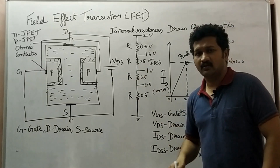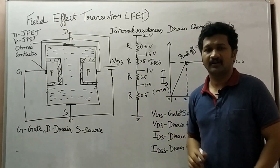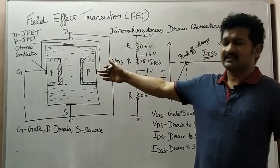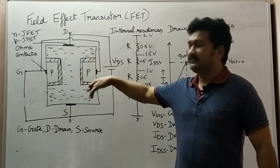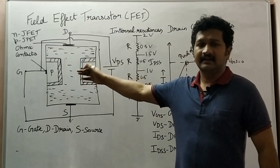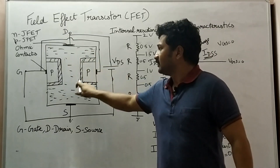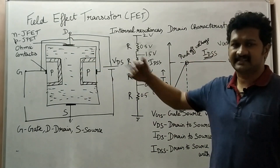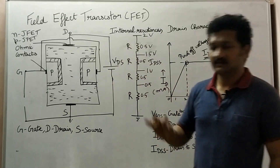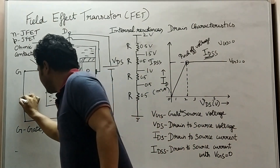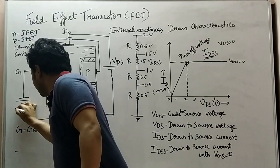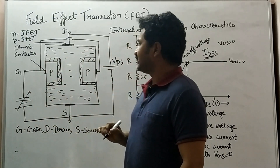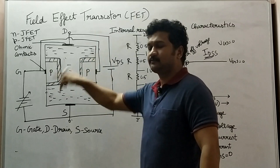In this video we are going to see about giving negative potential to the gate. In previous cases we did not influence the gate to close the depletion layer. Now we are influencing the gate along with VDS. We are applying a reverse bias potential to the gate-to-source terminal — both are reverse biased here.